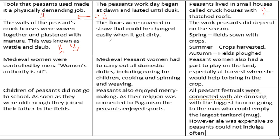The floors were covered in straw that could be changed easily when it got dirty — basically you're just chucking the straw out and replacing it, and one thing you were not going to be short of in medieval England was straw. The work peasants did depended on the season: in spring fields were sown with crops, in summer crops were harvested, and in autumn fields were ploughed. This means the life of a peasant was never stopped — every season they were doing something.